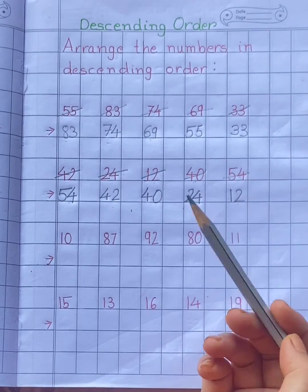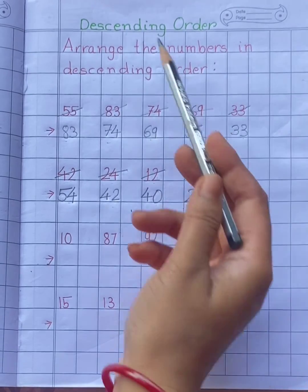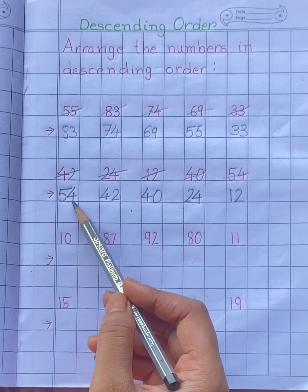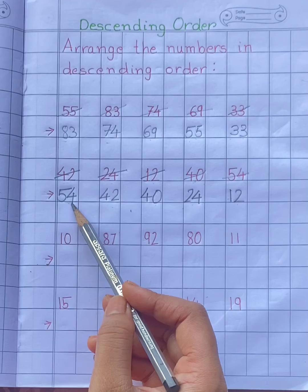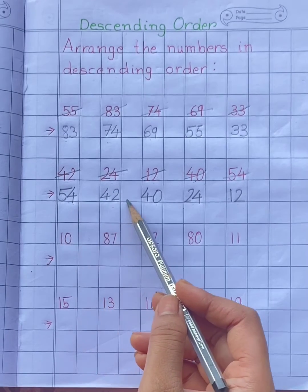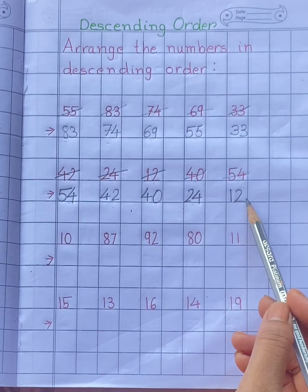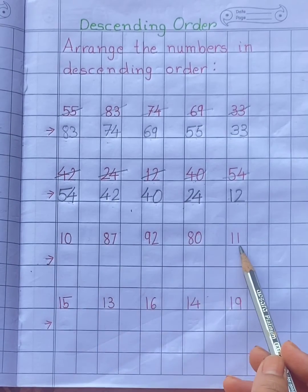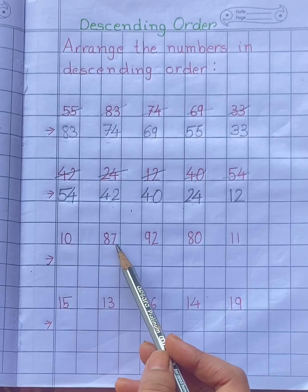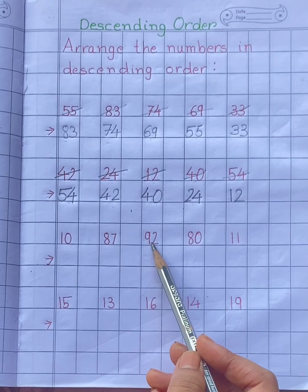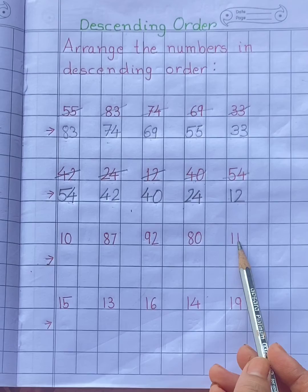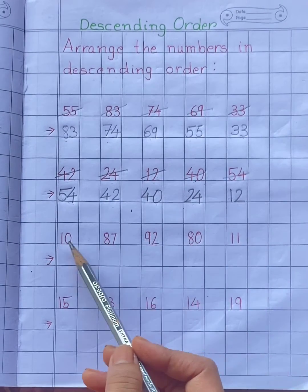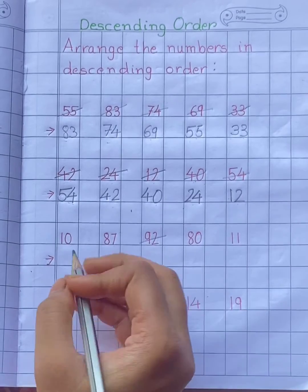Always remember that in descending order, we should always start with the biggest number and end with the smallest number. Now look at these numbers: 10, 87, 92, 80, 11. Tell me, children, which number is biggest here? 92.